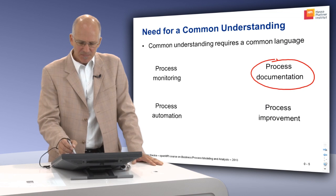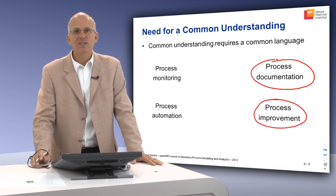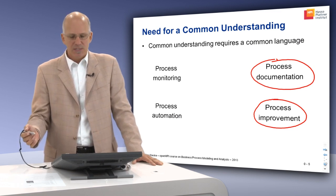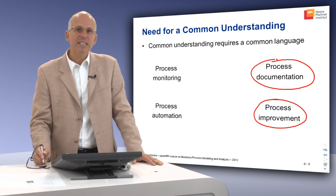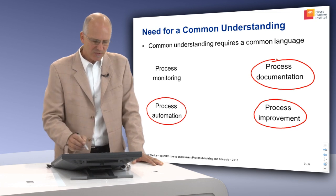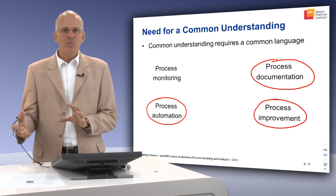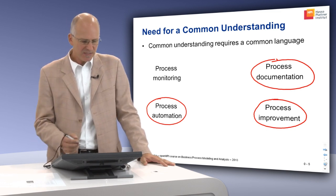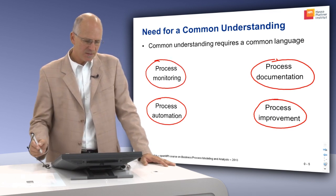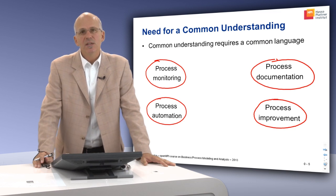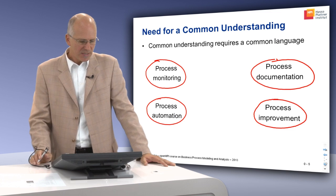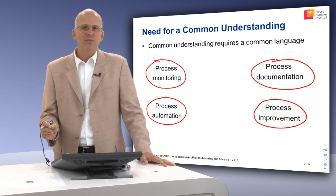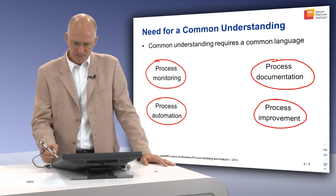Once the processes are documented, there is a strong need for process improvement. Domain experts, BPM consultants, and the IT department may all be involved. The IT department is crucially involved when it comes to process automation — taking the improved process and implementing it in the IT architecture. Once the process is implemented and running, it needs to be monitored, to see how well it performs and whether it fulfills the defined requirements.